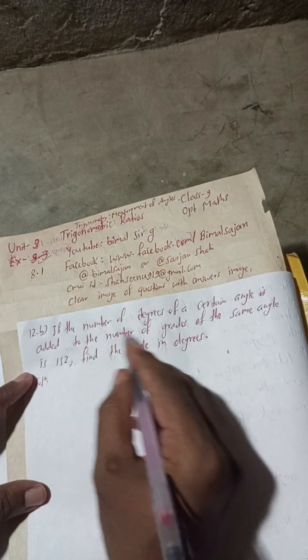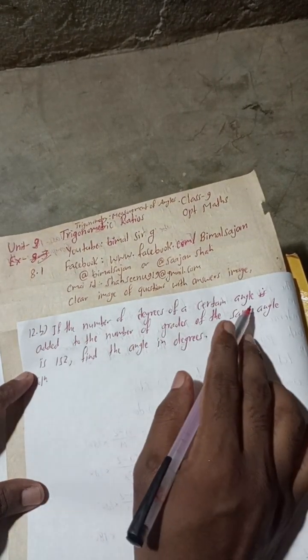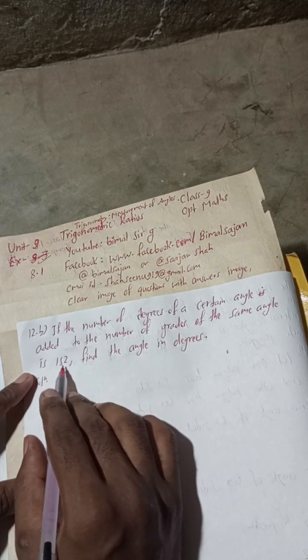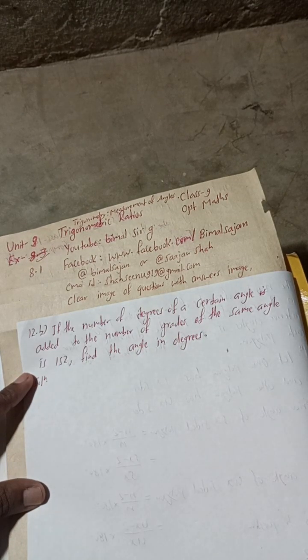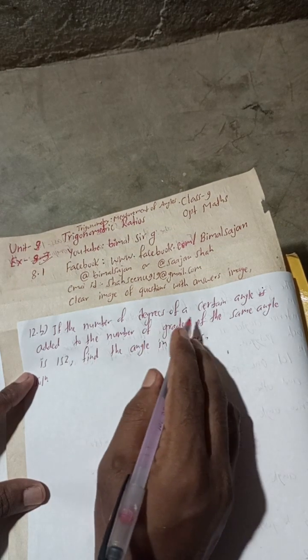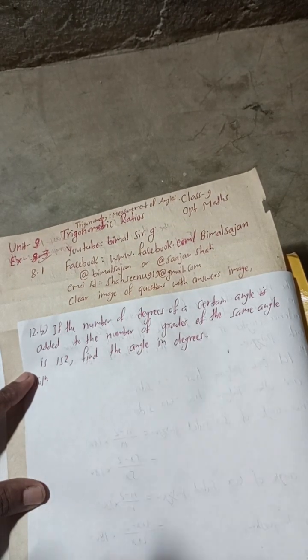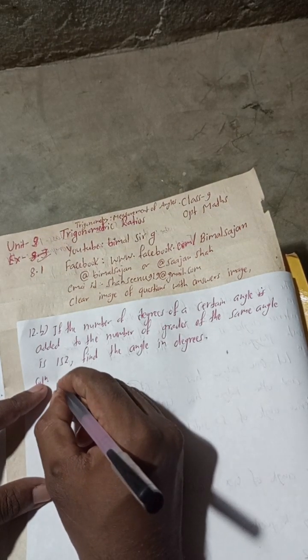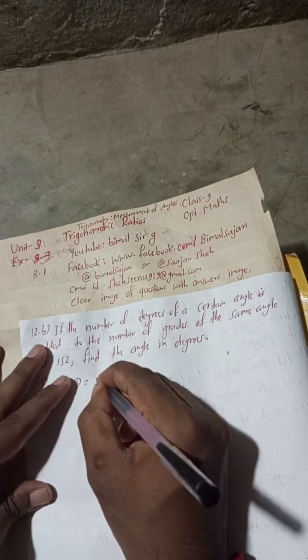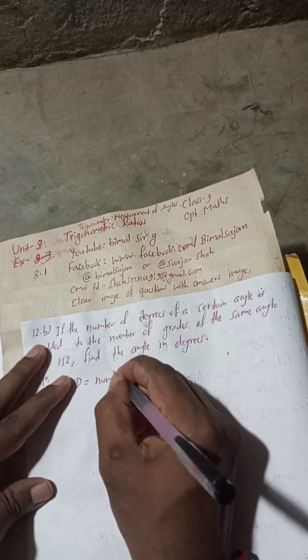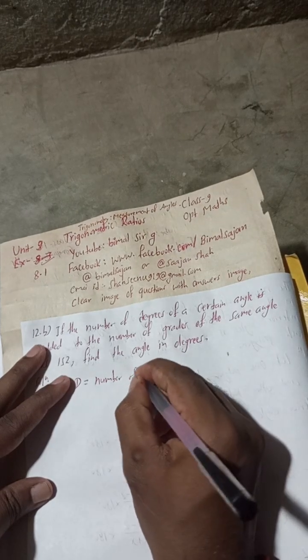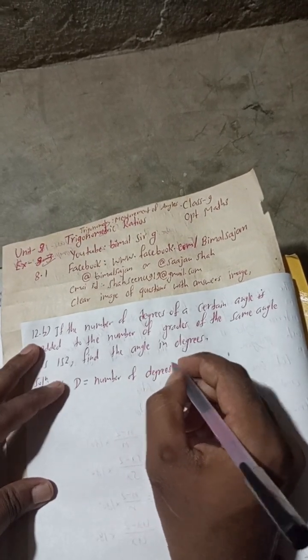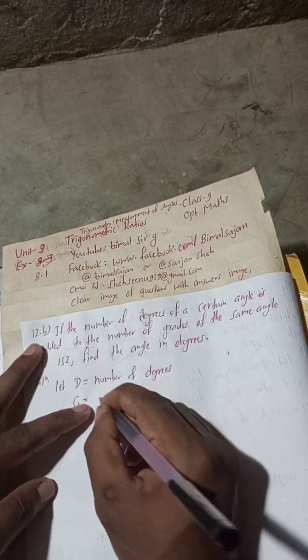If the number of degrees of a certain angle added to the number of grades of the same angle is 152, find the angle in degrees. Let D be equal to the number of degrees and G be equal to the number of grades.